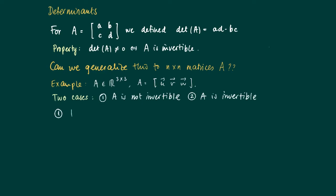In the first case when A is not invertible, we know that the column space of A is not the full R³, which means that the dimension of these vectors is not three. So U, V, and W are in some plane V.